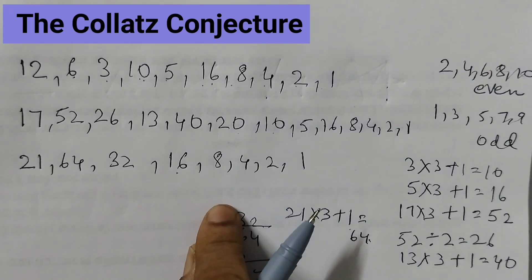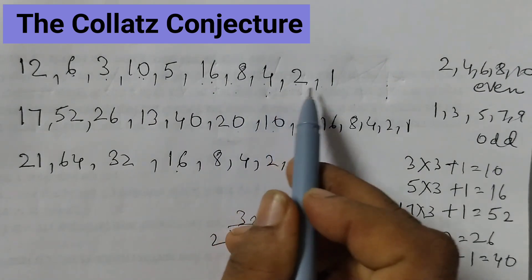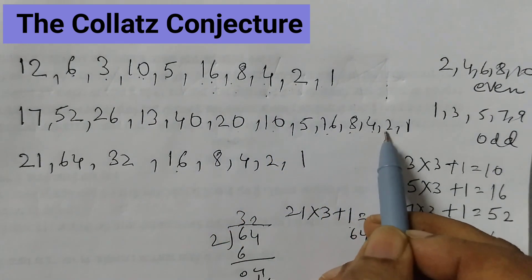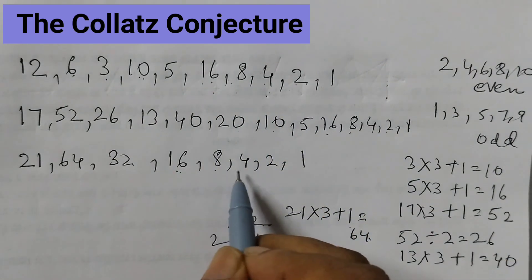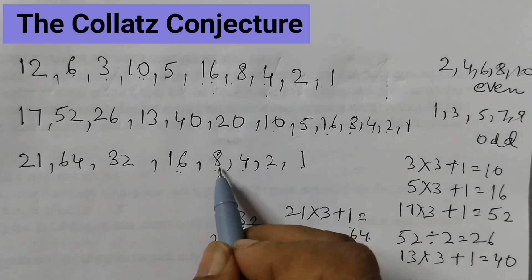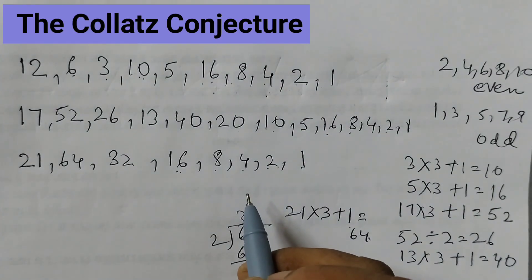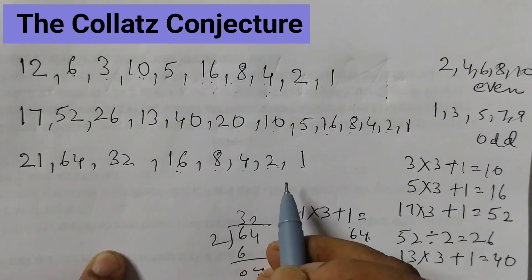So we see that there is something common in each of these patterns. See here 16, 8, 4, 2, 1. So it ends with 1. And the pattern 16, 8, 4, 2, 1 repeats. So this happens with all the numbers. Any number you take, you will get at the end the same pattern.